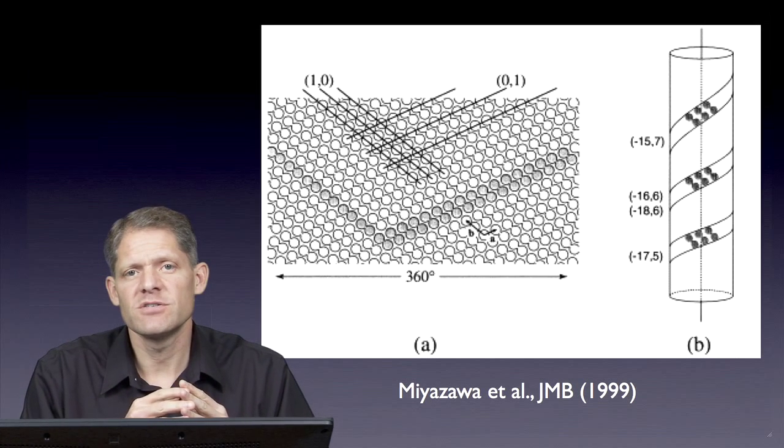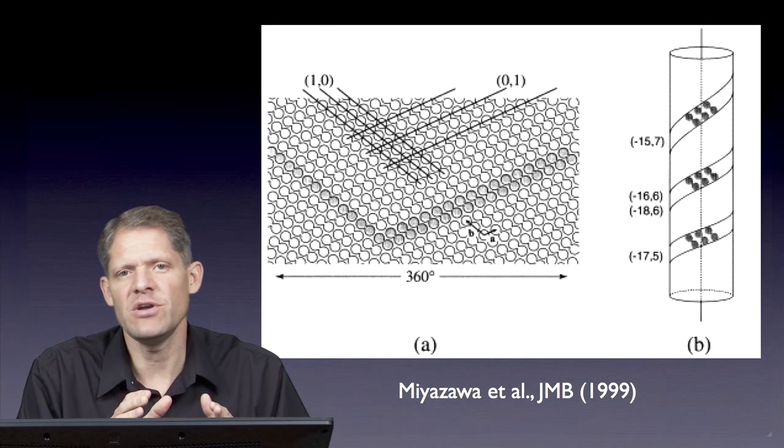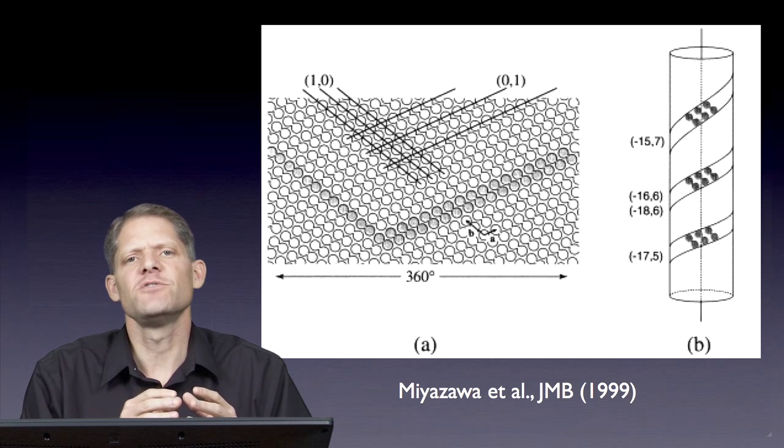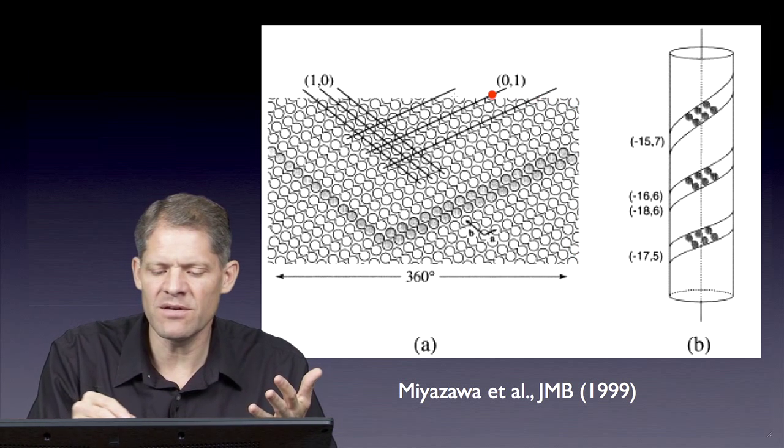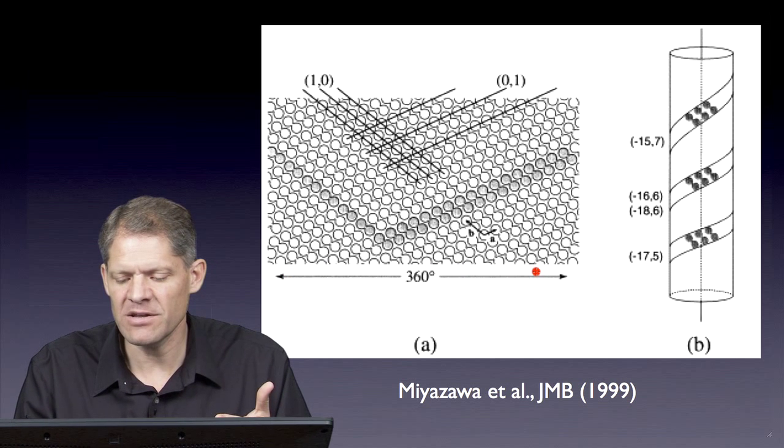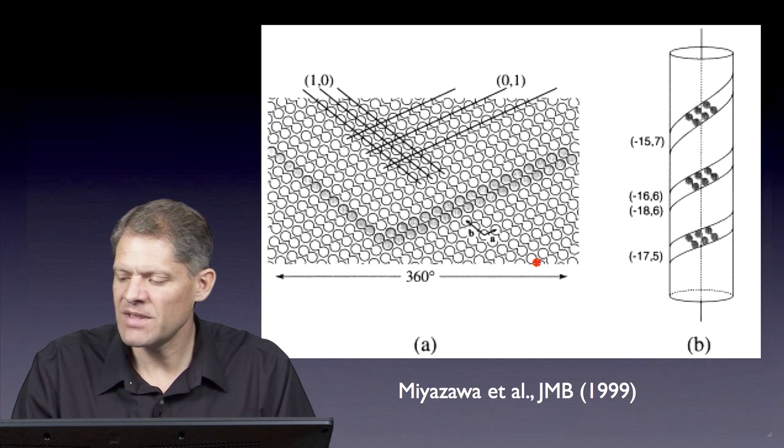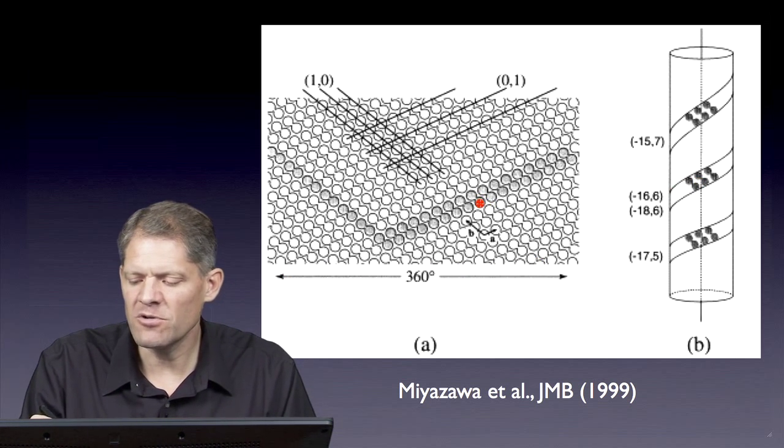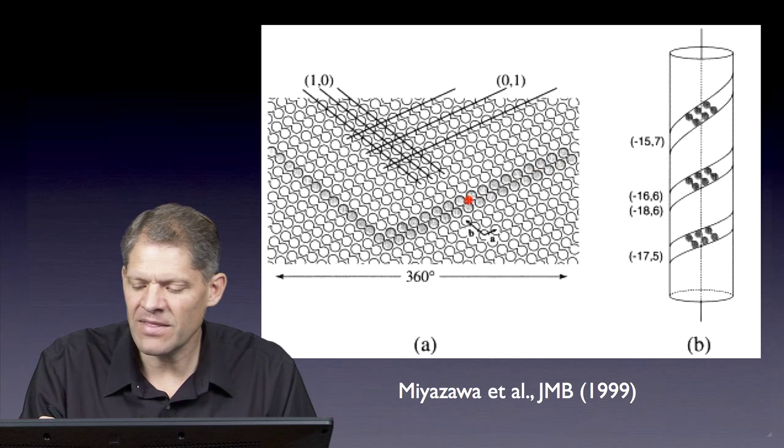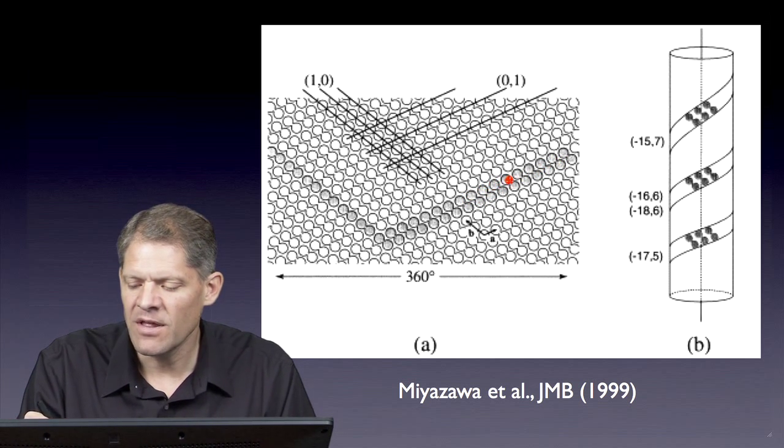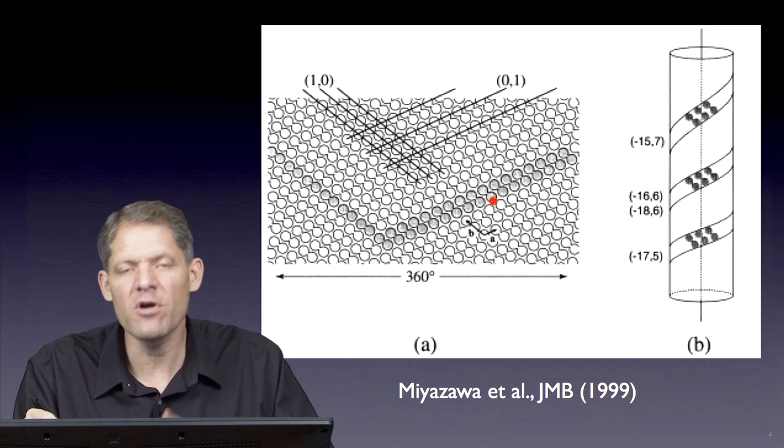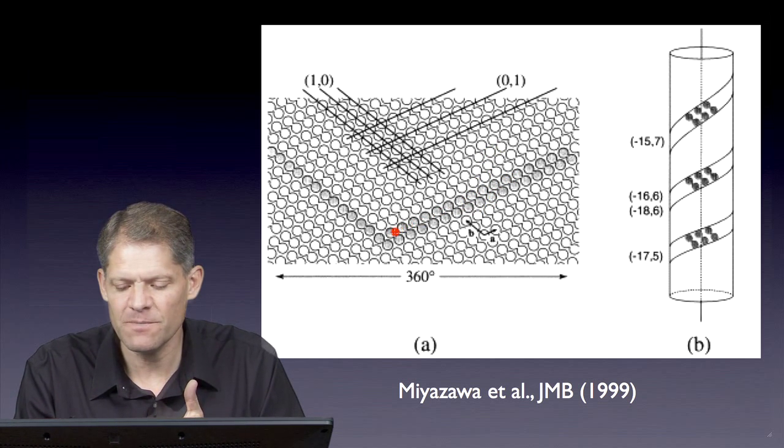Now, a class of structures that are related to 2D crystals are helical tubes. If we consider them in a flat perspective, we would see that these helical tubes are closely related to two-dimensional crystals, in that they have a series of unit cells that are packed close together in an ordered array in two dimensions.